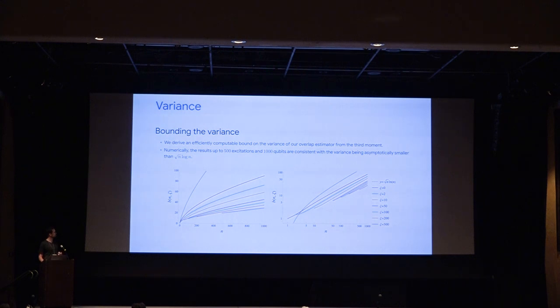And we weren't quite able to bound things in a very nice closed form analytical way, but we could use our expression for the third moment of this distribution to write down something that we could efficiently compute to bound the variance. And what we did then is we went and we figured that as long as we can do this on a thousand qubits we're probably in good shape.